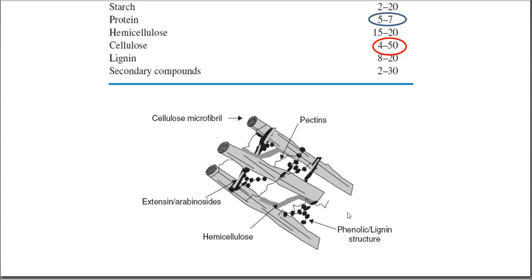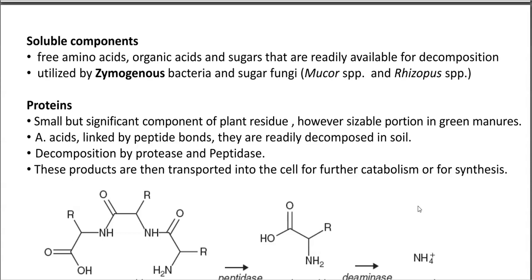The plant litter that has been reaching into the soil will have the following constituents bonded together: cellulose, hemicellulose, lignin molecule, pectin molecule, as well as various kinds of hemicellulose components such as extensin and arabinocytes that are all tightly bounded to the structure. The soluble components — which constitute amino acids, organic acids and sugars — would be readily available in the system for decomposition. They are commonly degraded by the zymogenous group of bacteria, which gets dominated under particular conditions and can effectively utilize this carbon substrate. Certain fungi such as Mucor and Rhizopus may also be involved in the degradation.